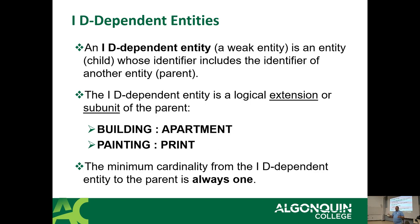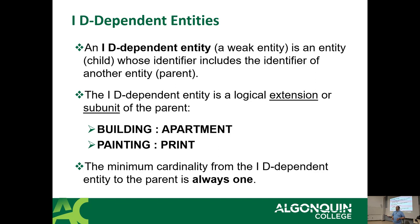An ID-dependent entity, also known as a weak entity, is a child record whose identifier includes the identifier of the parent. Examples include: a building has an apartment, an artist has prints that cannot exist without the painting. The minimum cardinality from a weak entity to the parent is always one — there must be one and only one parent to that record.